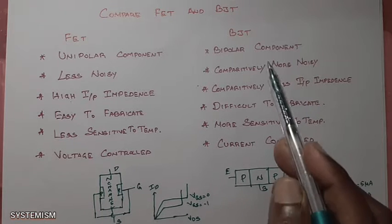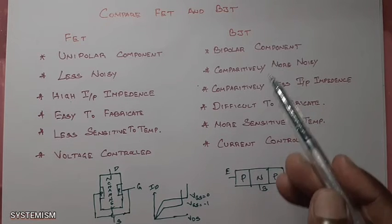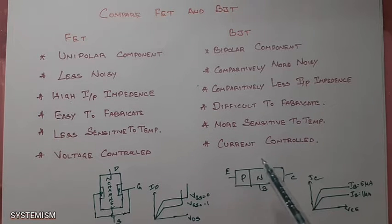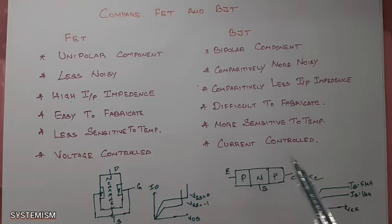But in this BJT it is a bipolar component. What is bipolar? The operation of this PNP BJT depends upon both electrons and holes.